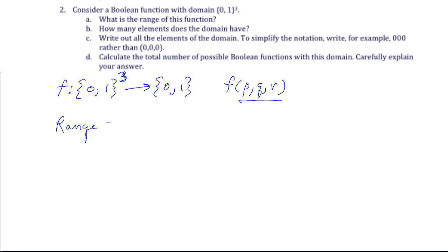It equals {0,1} as it is for all Boolean functions. For part B, how many elements does the domain have? The size of the domain is written as absolute value on that set. We can write this several different ways, but we could just write 2³ which is 8.